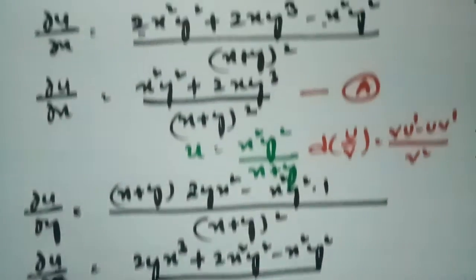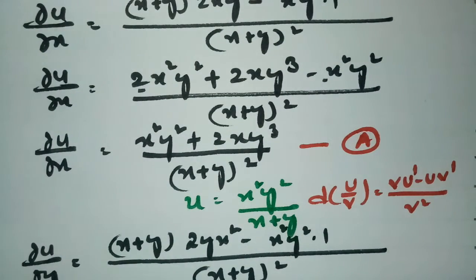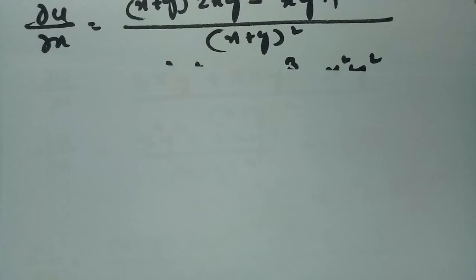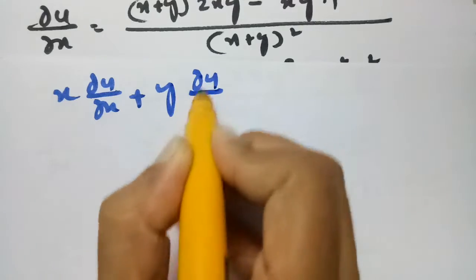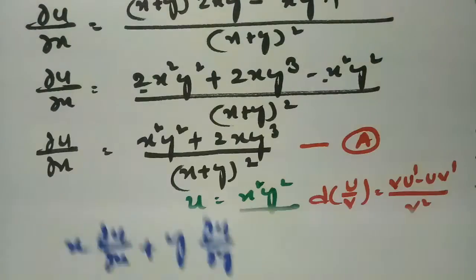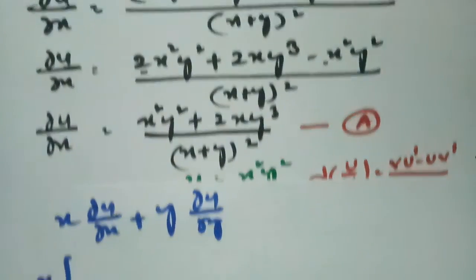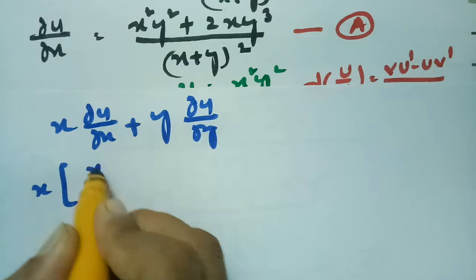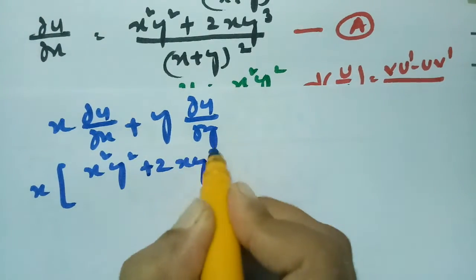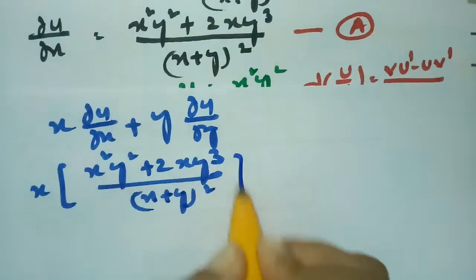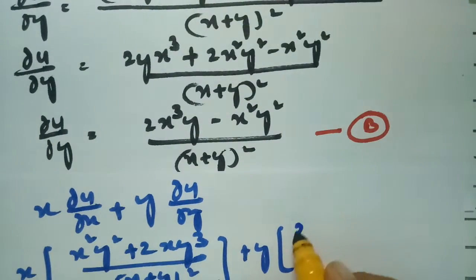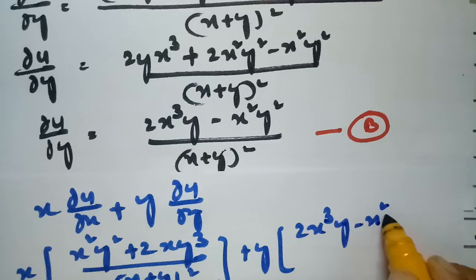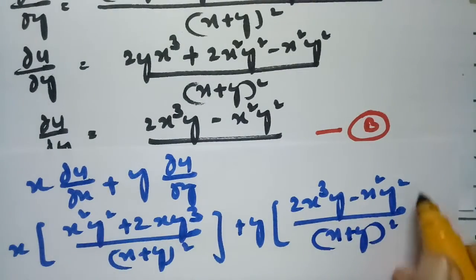Now according to Euler's theorem, for verification we compute x into ∂u/∂x plus y into ∂u/∂y. From equation 1, ∂u/∂x is x²y² plus 2xy³ divided by (x+y) whole square. And ∂u/∂y is 2x³y plus x²y² divided by (x+y) whole square.